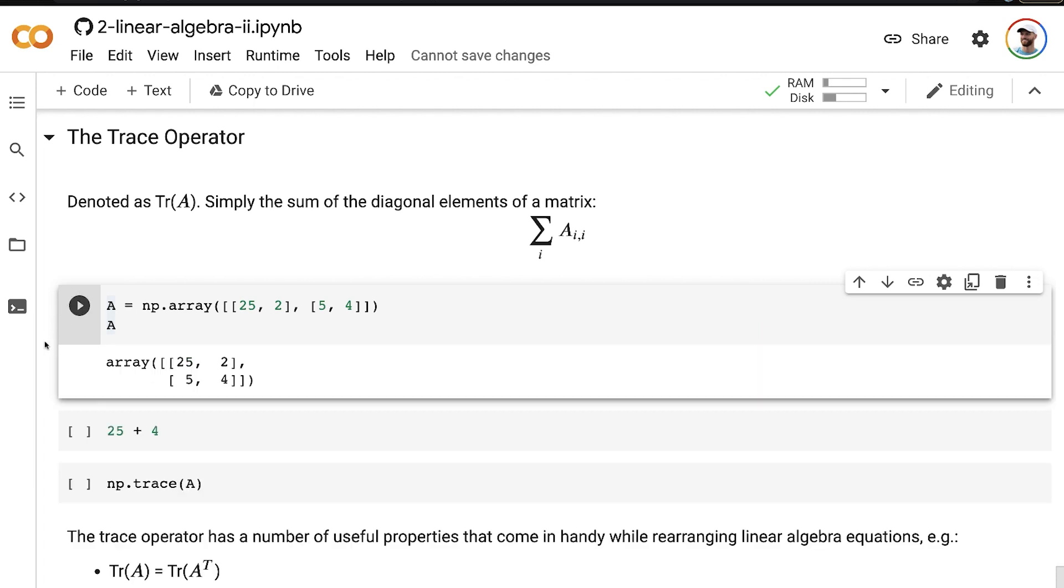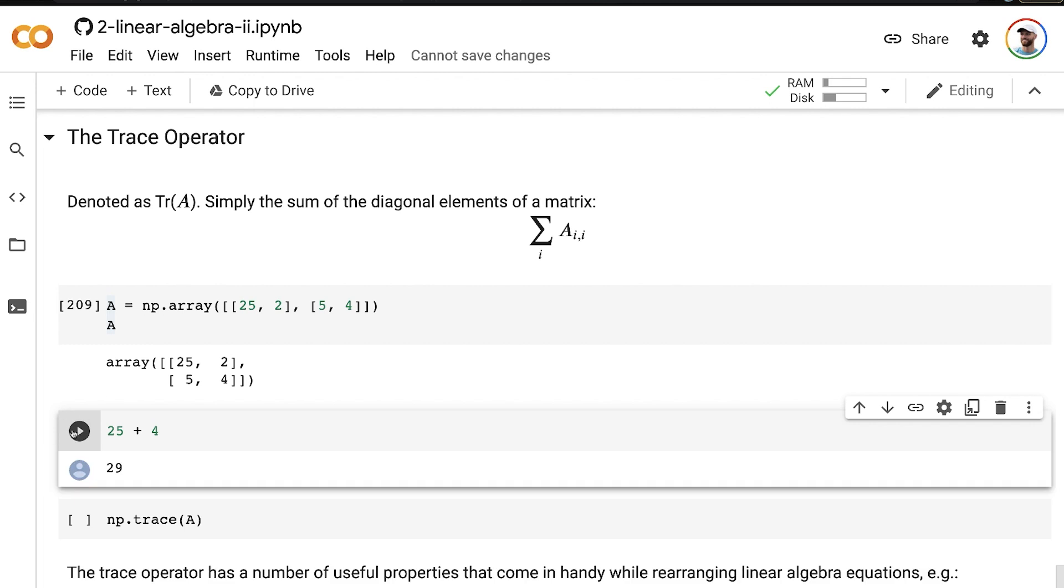So let's say we have this matrix A here. The trace is simply the sum of the diagonal elements of the matrix, so 25 plus 4 in this case. That comes out to 29.